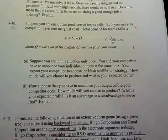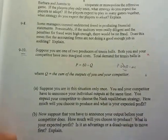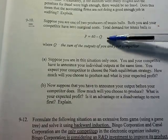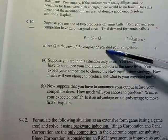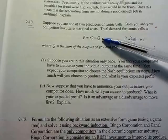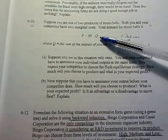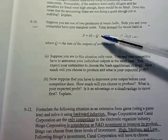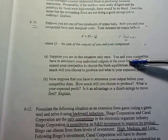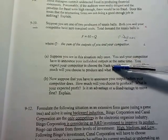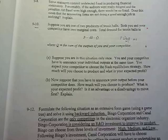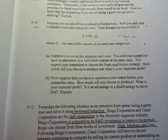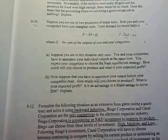What I'm going to go through now is the Cournot Equilibrium. So what we have is the demand function: price is equal to 60 minus Q, where Q is the sum of the outputs of you and your competitor. So Q is equal to Q1 plus Q2. We're in this situation only once — us and our competitor have to announce individual outputs at the same time, so we choose the Nash Equilibrium strategy. How much will we choose to produce and what is the expected profit?